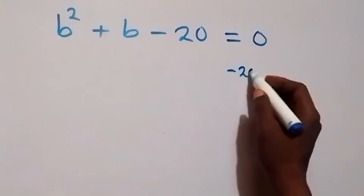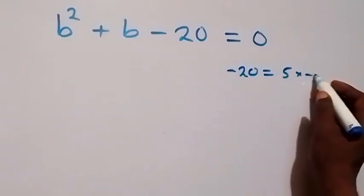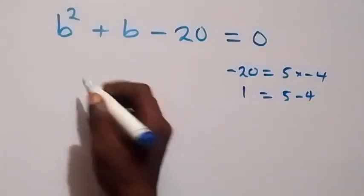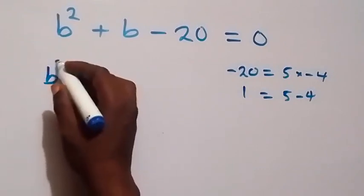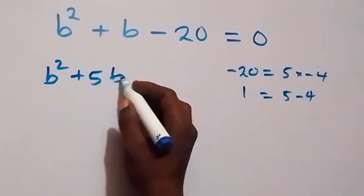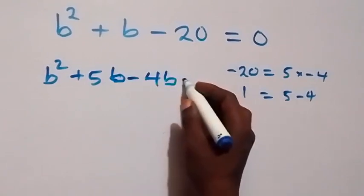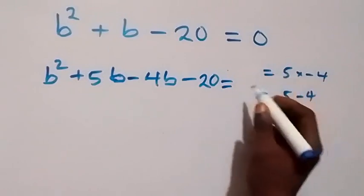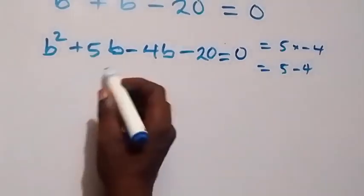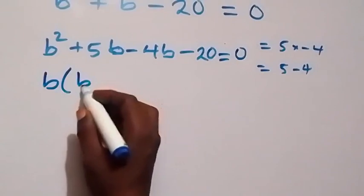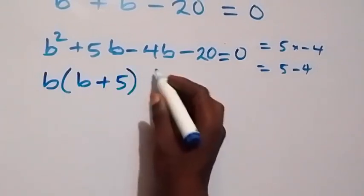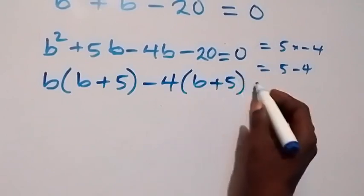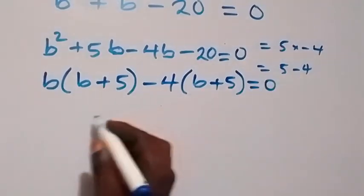We have a quadratic equation, which we solve by the factorization method. The product is minus 20, which can be written as 5 times minus 4, and the sum is 1, written as 5 minus 4. So we write this as b squared plus 5b minus 4b minus 20 equals 0. Grouping, we factor out b from the first two terms: b times b plus 5, then minus 4 common from the last two: minus 4 times b plus 5, equals 0.